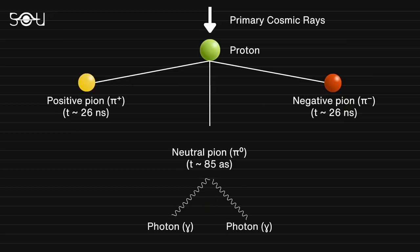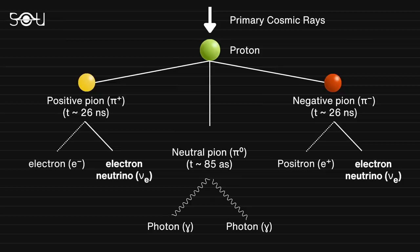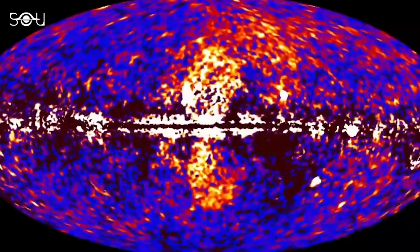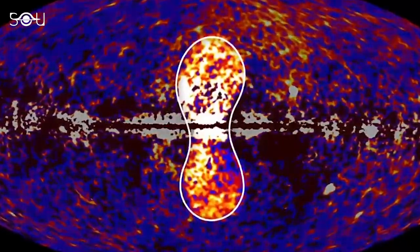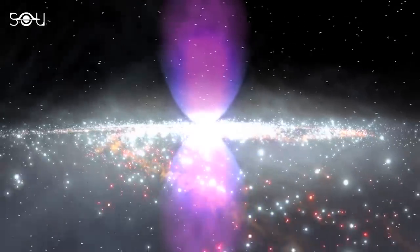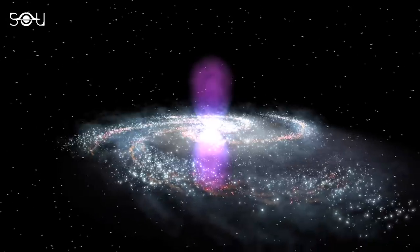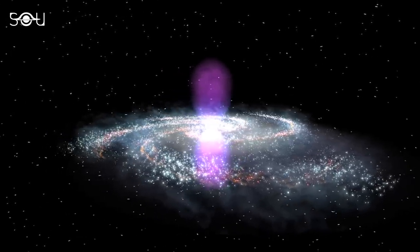As neutral pions undergo decay, they emit gamma rays, whereas the breakdown of charged pions result in the production of highly energetic electron neutrinos. Previous research endeavors have successfully detected gamma rays originating from the Milky Way's plane, leading scientists to anticipate the presence of high-energy neutrinos in that region as well.